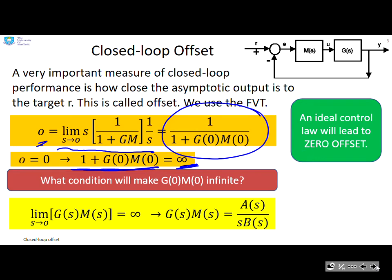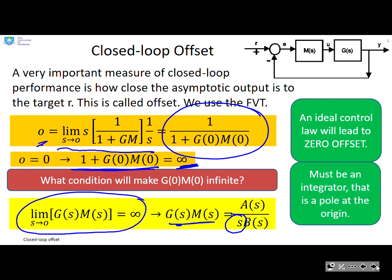Well, the condition is quite simple. This limit, the limit as S goes to zero of G of S, M of S equals infinity if these two transfer functions include an integrator. You can see there I've put an S on its own in the denominator. So there must be an integrator that is a pole at the origin in either G or M in order to get zero offset.